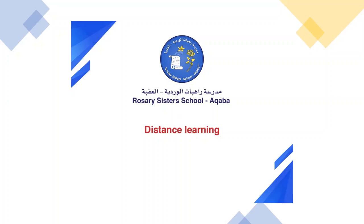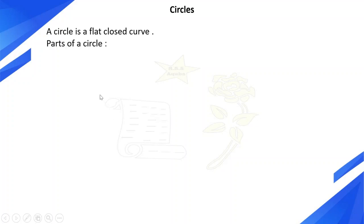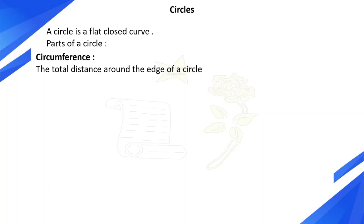Hello, my dear students. I wish you all are doing great. Today we will learn about parts of the circle. A circle is a flat closed curve. Parts of a circle: circumference — the total distance around the edge of a circle.